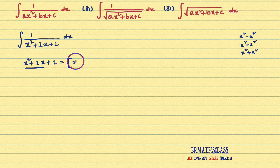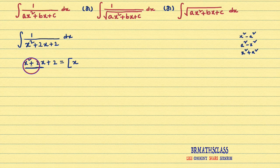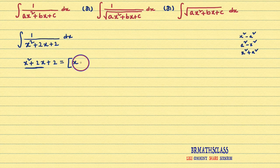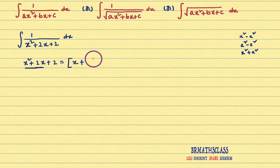So, always you write x here because x square is there. You always write x. Immediately here, you observe what sign is there. Here, plus sign is there. You write the same sign. If minus sign is there, we will write minus.